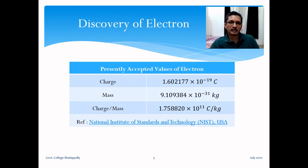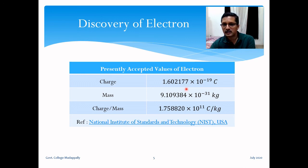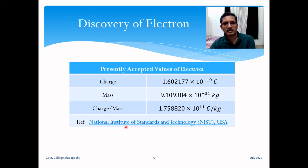The presently accepted values are: electric charge = 1.602177 × 10⁻¹⁹ C; mass = 9.109384 × 10⁻³¹ kg; charge-to-mass ratio = 1.758820 × 10¹¹ C/kg. These values are from the National Institute of Standards and Technology (NIST), USA, and the reference hyperlink is provided.